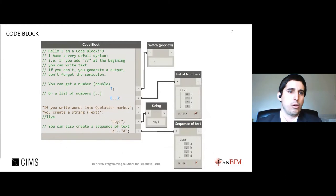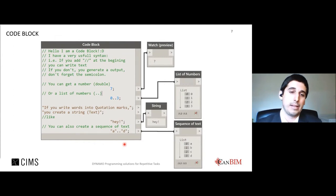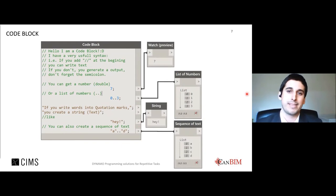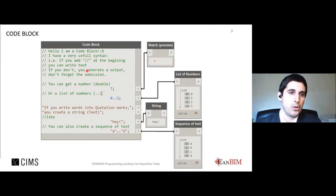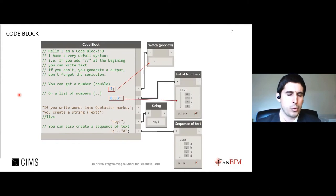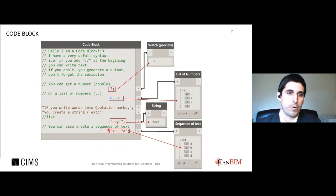Dynamo also has the CodeBlock, a unique feature that dynamically links a visual programming environment with a text-based one. It has access to all the nodes of Dynamo but in a simpler way. For example, you can use the CodeBlock to create a number (called a double in Dynamo), to create a sequence or list of numbers — such as numbers from zero to three — or to create text (a string), and sequences of text.